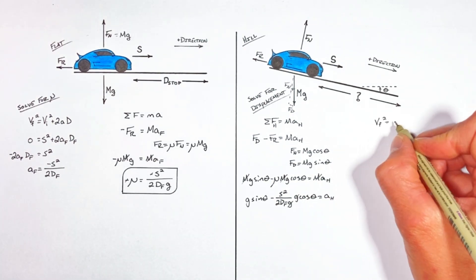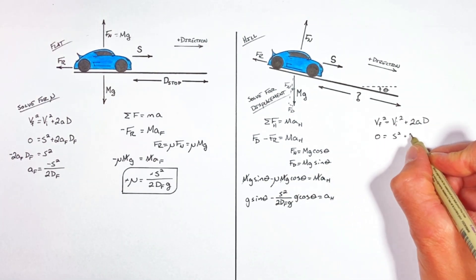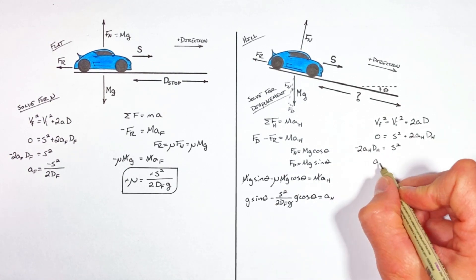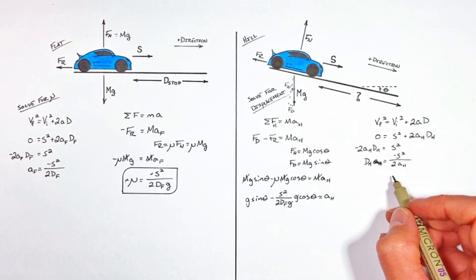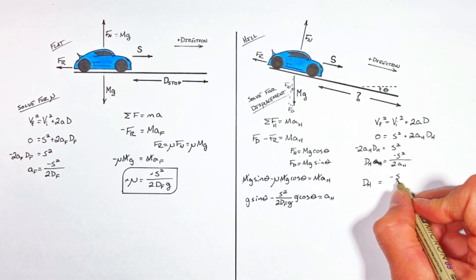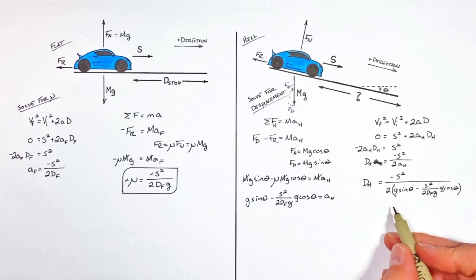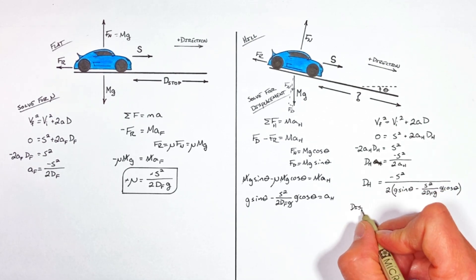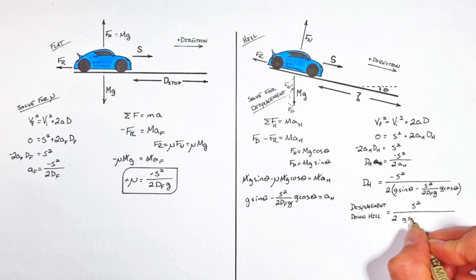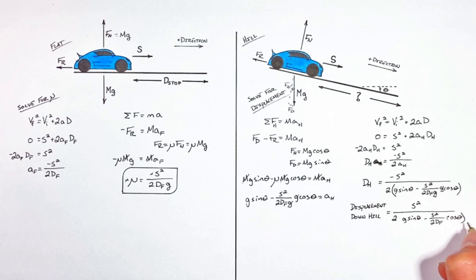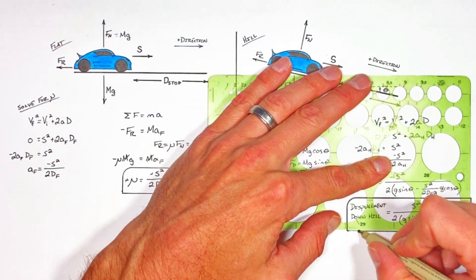Going back to the kinematic equations where we started, we can solve for the stopping distance of the car on the hill. Plugging in our term for acceleration and solving for d_H, we get an expression for the displacement of the car down the hill.